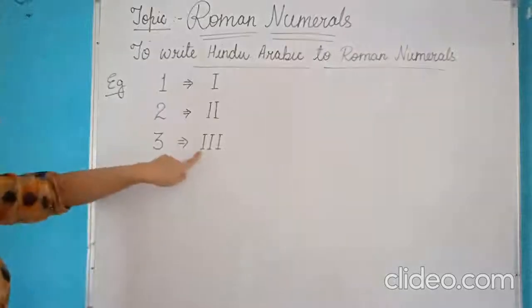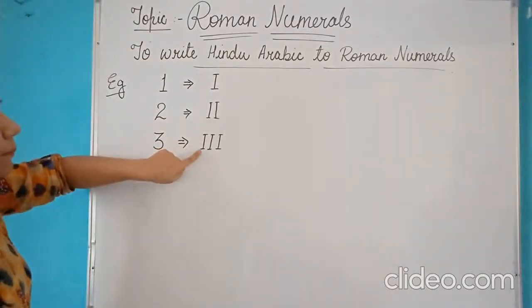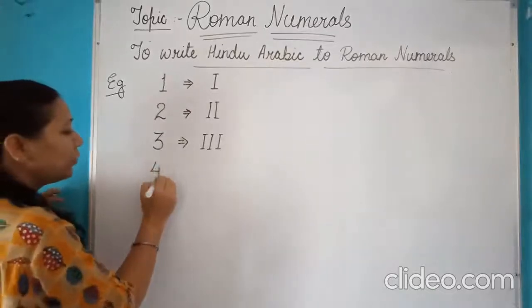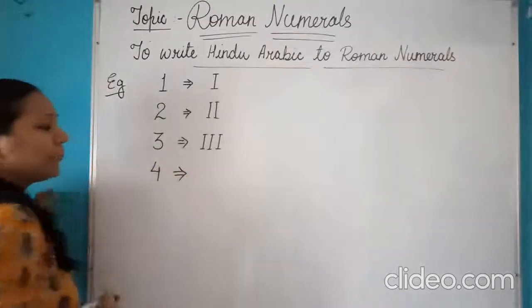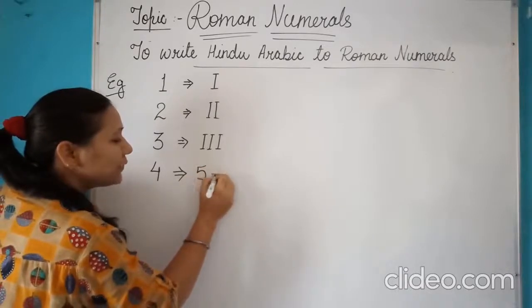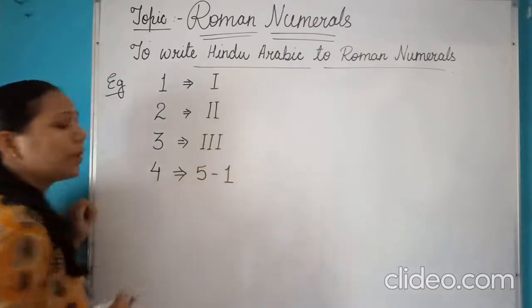But we can represent this bar of I only 3 times. So for the next numeral which is 4, how to write 4? For writing 4, a simpler way is 5 minus 1.